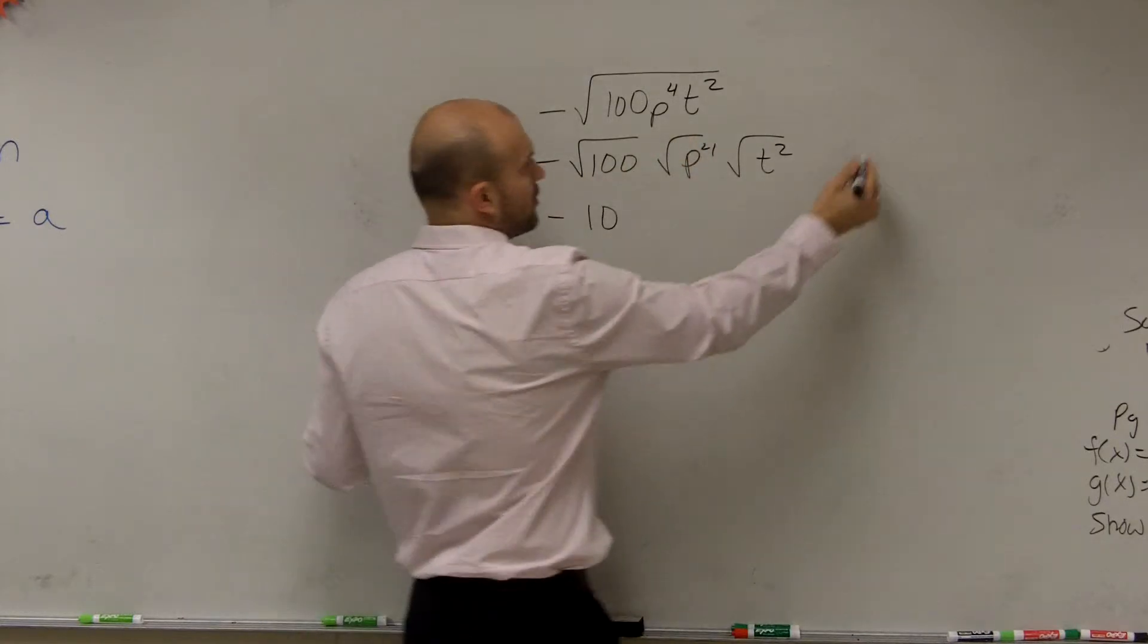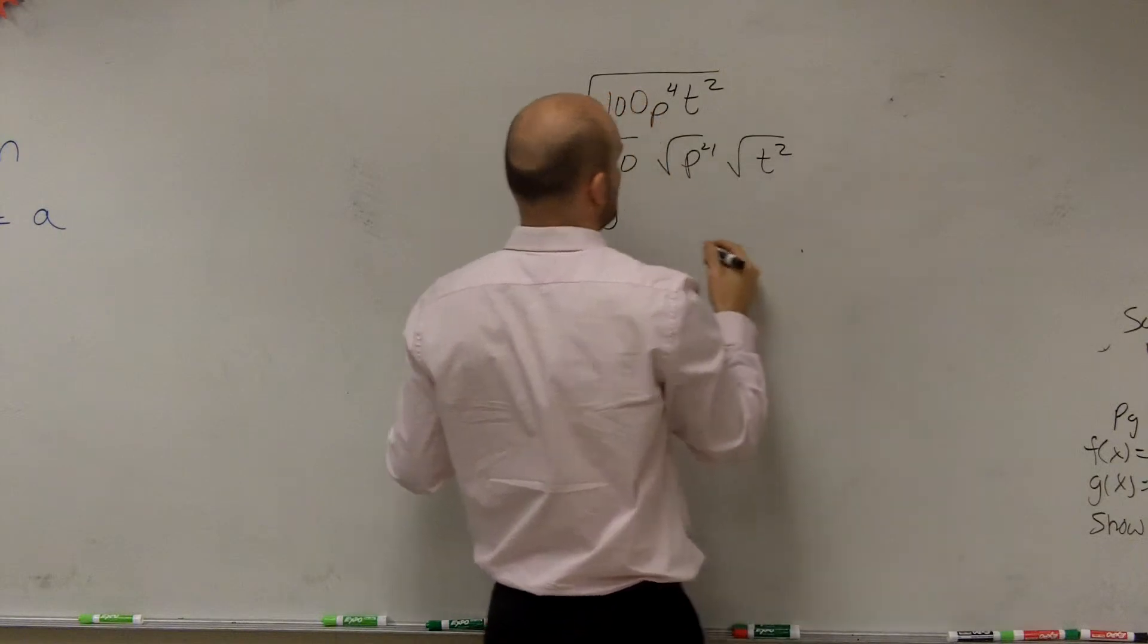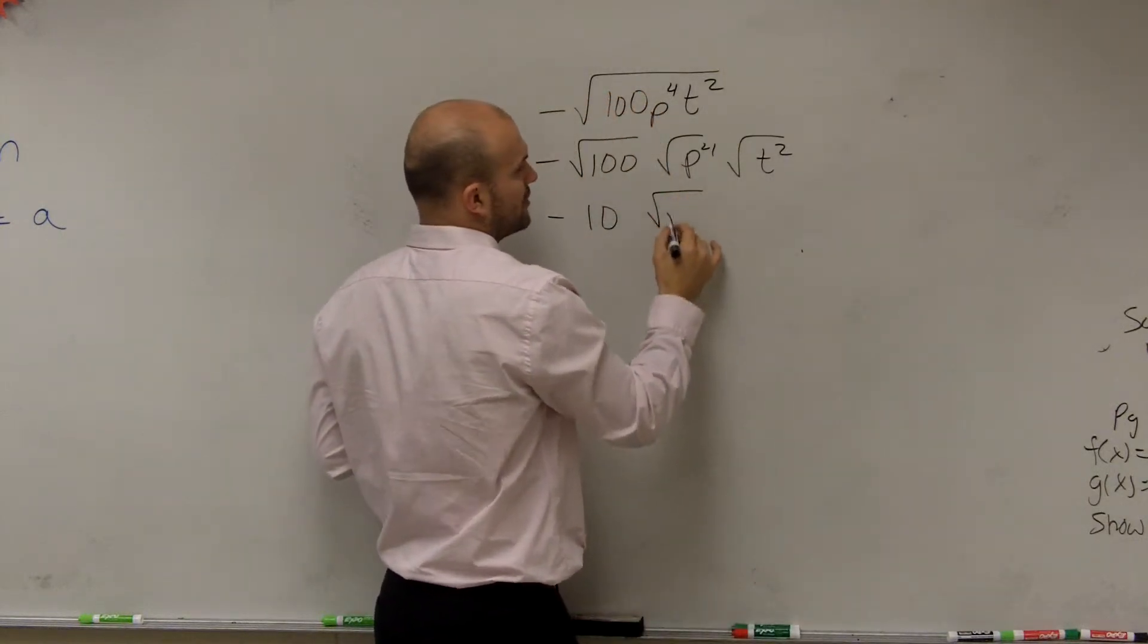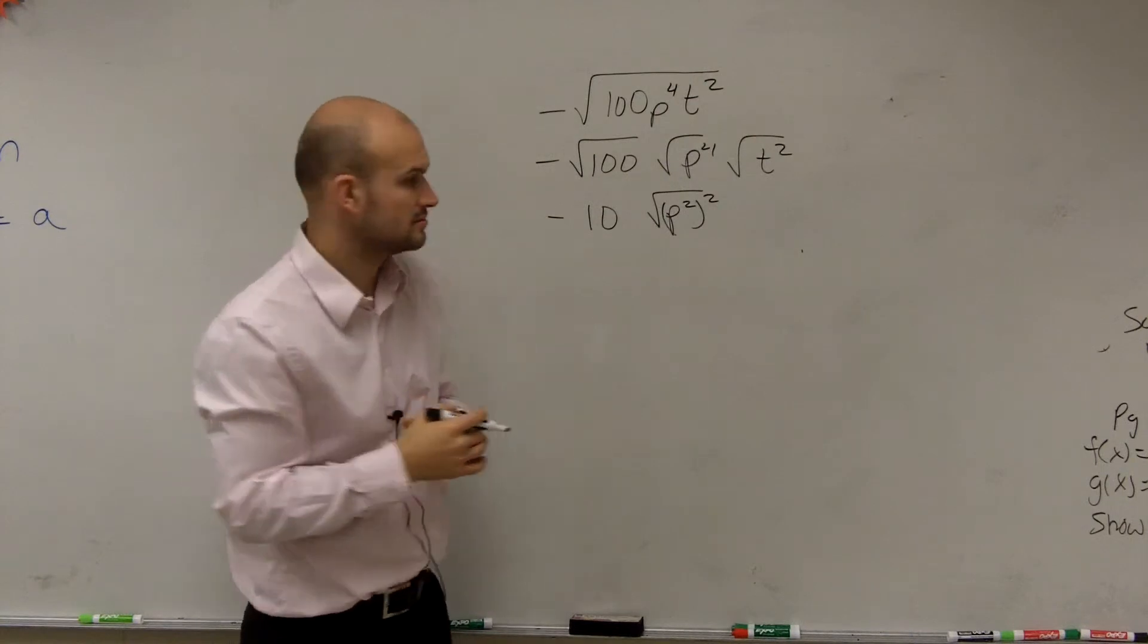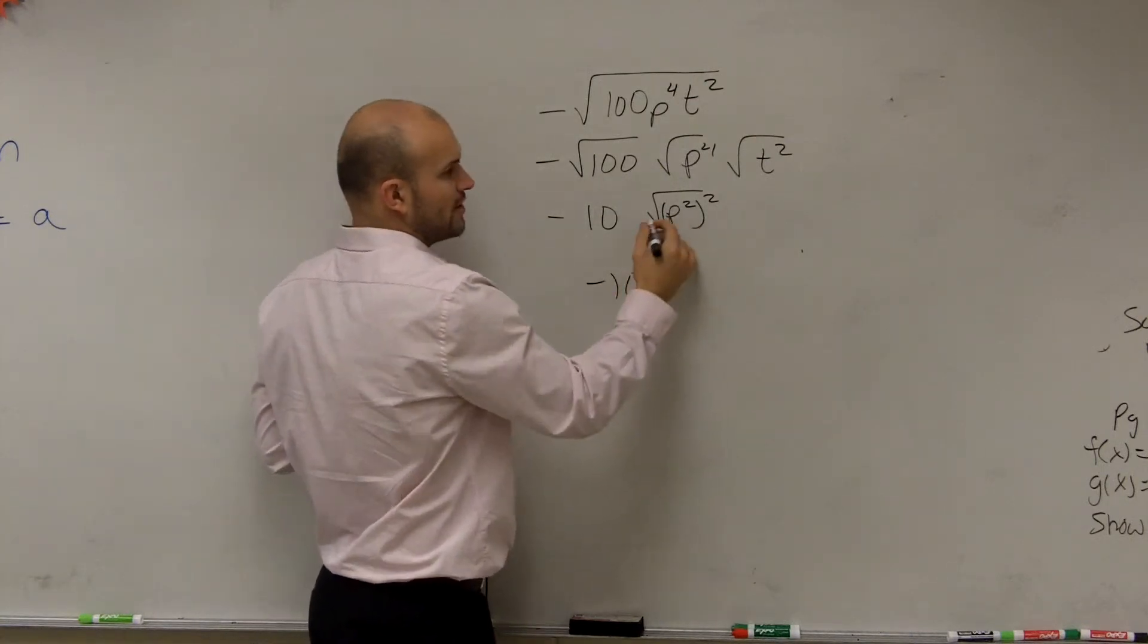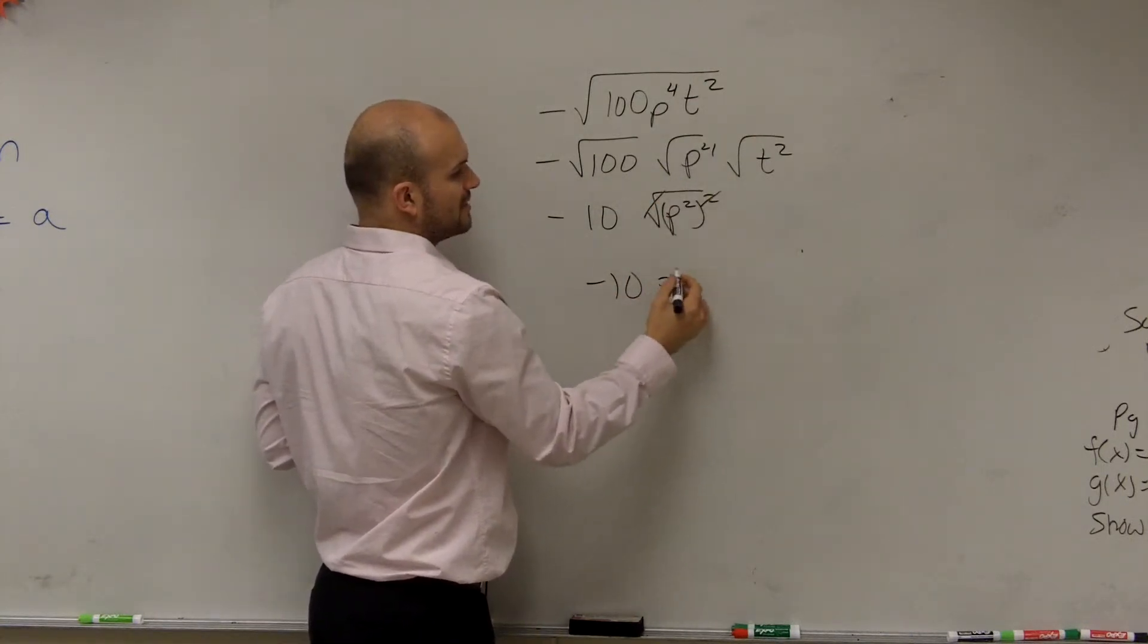Square root of p to the 4th, I can rewrite that as the square root of p squared squared, right? Square root of p squared is just going to leave me with p squared.